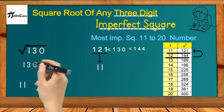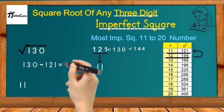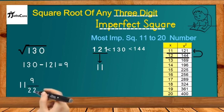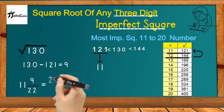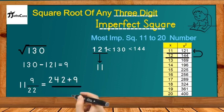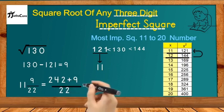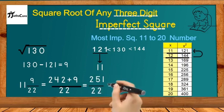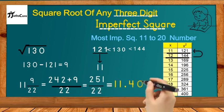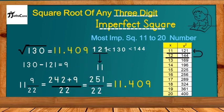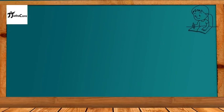Next, we subtract 121 from 130: 130 − 121 = 9. We write down 9 and divide it by 22, which is double of 11. Solving this mixed fraction: 11 × 22 = 242, then 242 + 9 = 251, divided by 22. Solving this fraction gives us 11.409, and this is our final answer for the square root of the three-digit imperfect square 130.